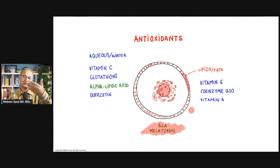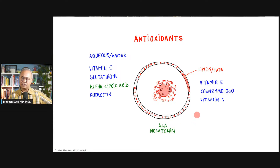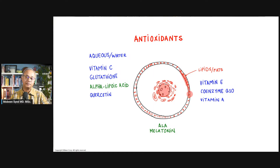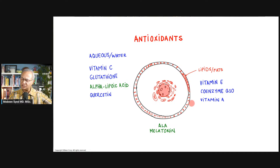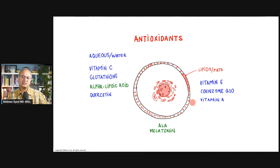Alpha lipoic acid and melatonin are antioxidants — in addition to their other functions — and they can work in both the water environment and the lipid environment. This means that if you are looking to curtail inflammation and your doctor suspects reactive oxygen species and lipid species are being produced with chronic inflammation going on, you have to take a combination of water-soluble antioxidants and lipid-soluble antioxidants.